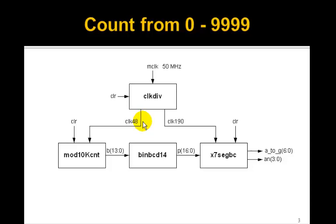We'll also tap off clock 48, our 48 Hz one, and that will drive our mod 10k counter, which will be a modification of our modulo 5 counter that we did. We'll just make it a modulo 9999 counter. And then we'll modify the binary to BCD converter that we did back in Lesson 34, and make it a 14-bit counter since we have 14 bits coming out here for our 9999.